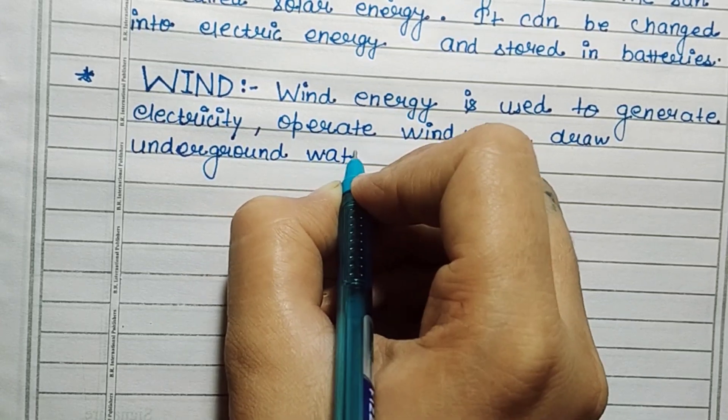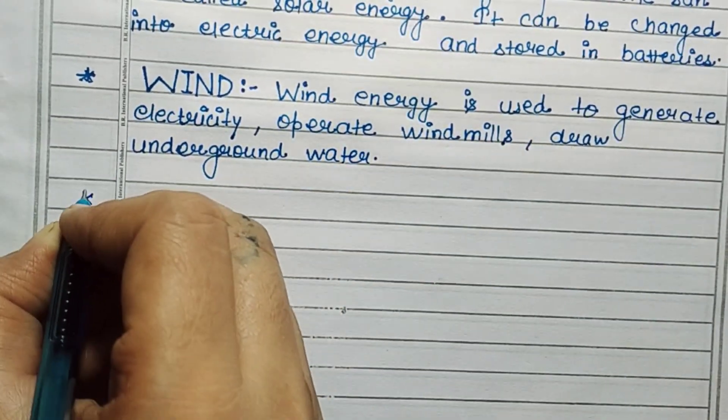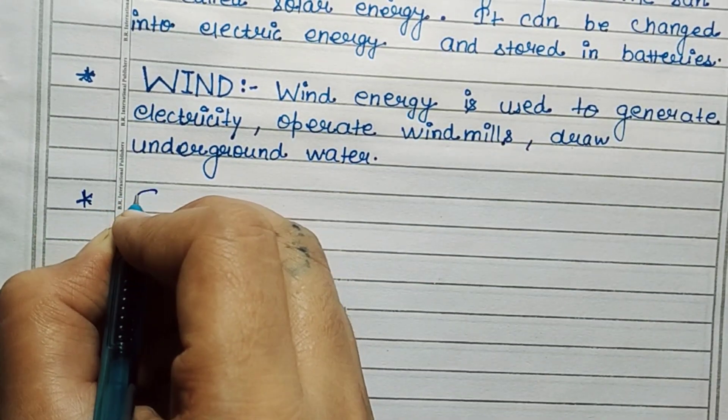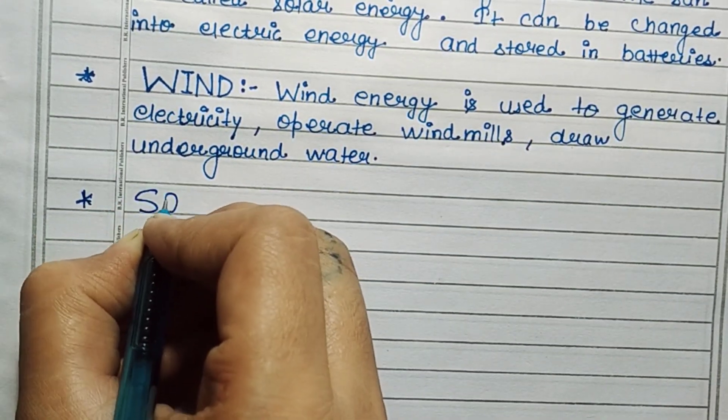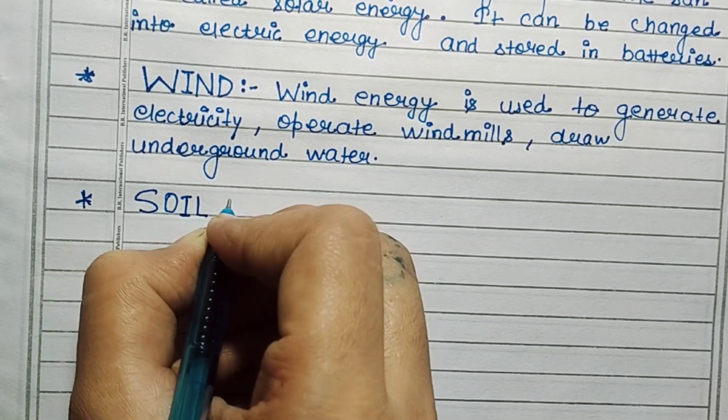Wind energy is used to generate electricity, operate windmills, and draw underground water.